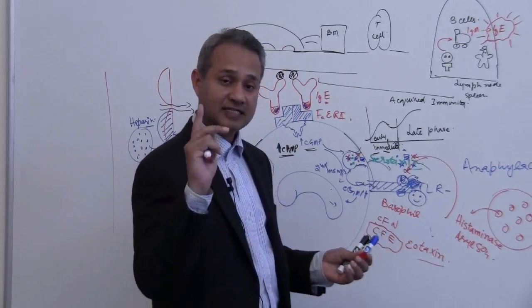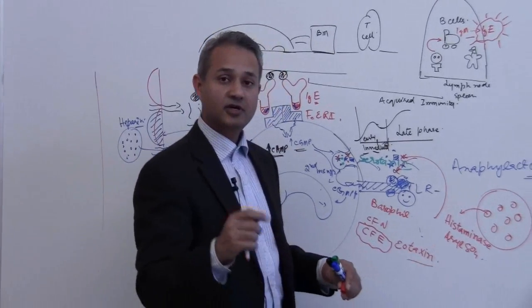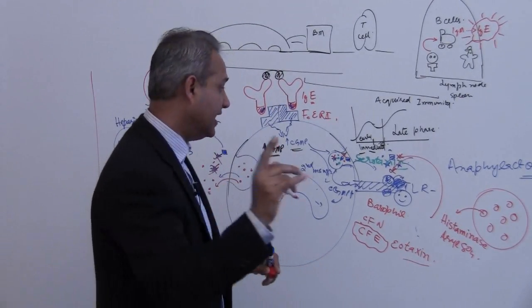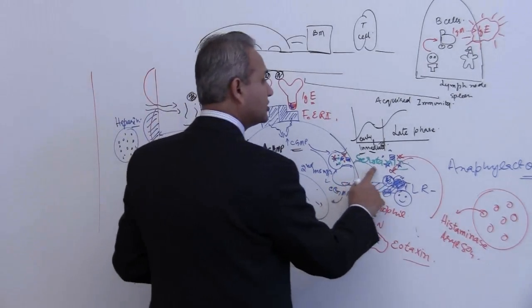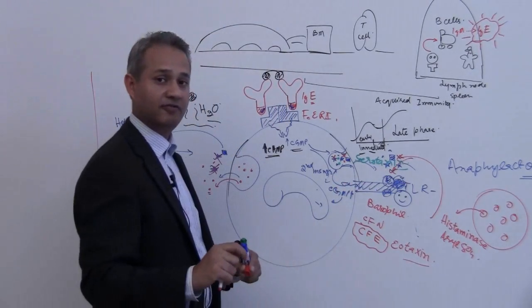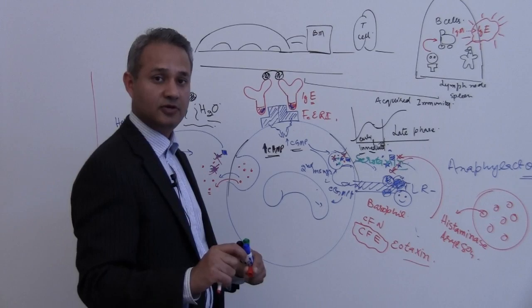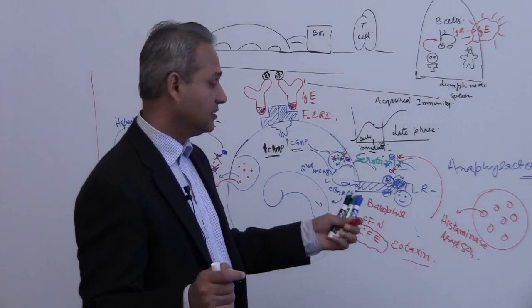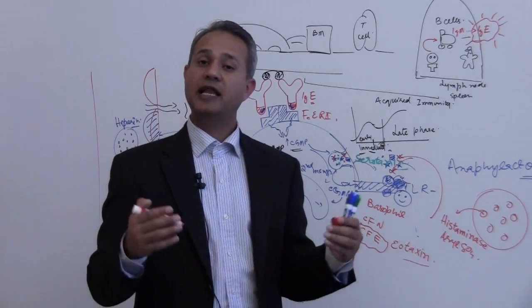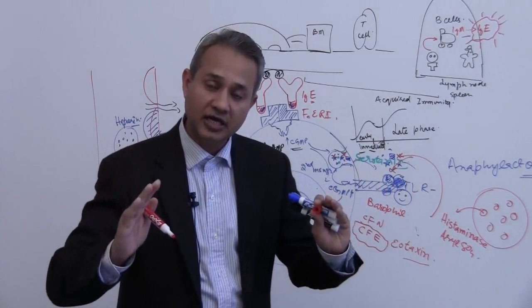The second is the aryl sulfate. So the aryl sulfate mediator which is released would destroy the slow reacting substances of anaphylaxis. This is how the eosinophil tries to help the situation and reduce the allergic reaction.